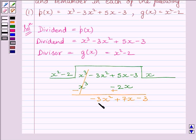Now, to get -3x², we will multiply x² by -3. Now, multiplying the divisor by -3, we get -3x² + 6. Now, we will subtract the like terms and re-write the other terms of the dividend. Always remember to change the signs while subtracting. So, we get 7x - 9.